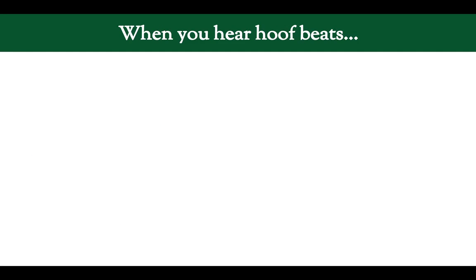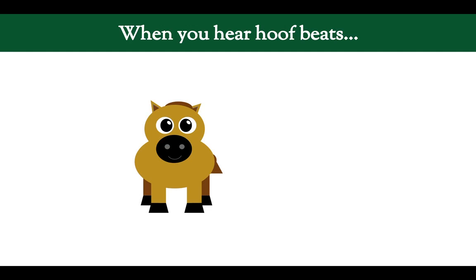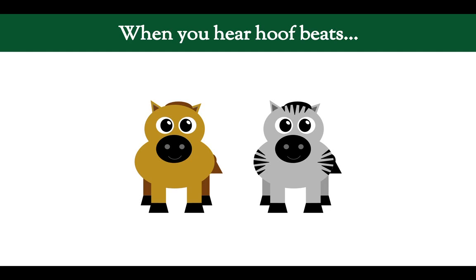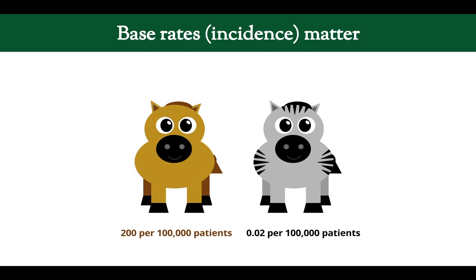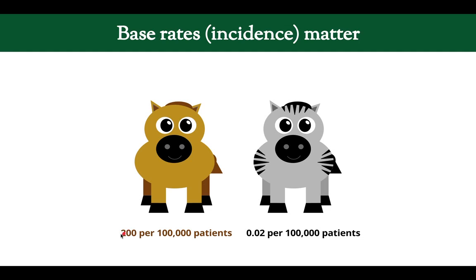There's an adage in medicine: when you hear hoof beats, think of horses and not zebras. Base rates and incidence matter. The disease with 200 cases per hundred thousand is about 2% more common than one with 0.02 per hundred thousand — a huge difference. A common medical student error is picking a very rare disease because it has some matching features.